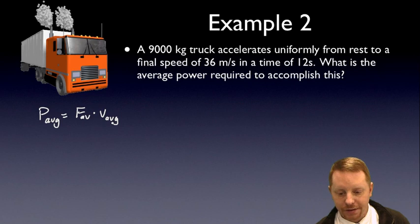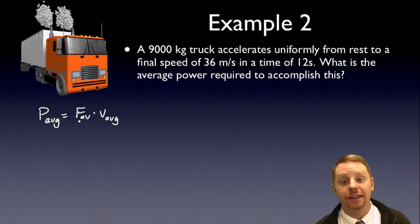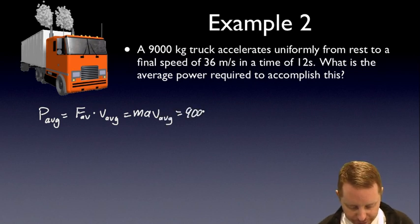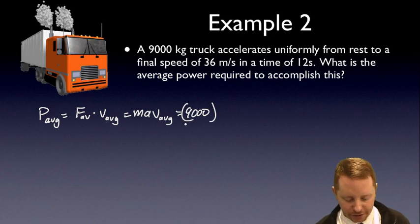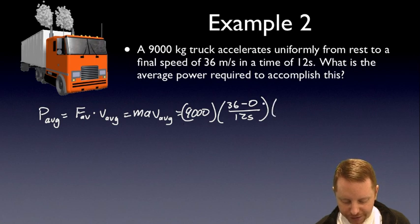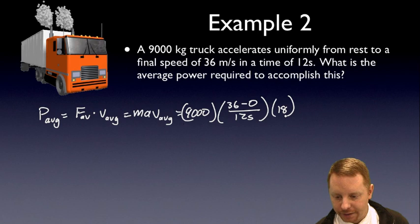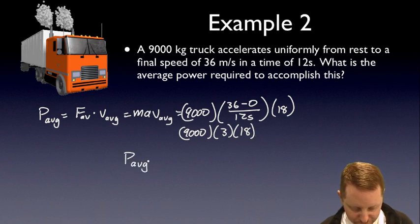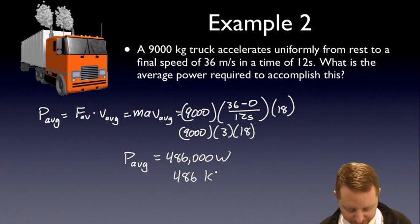The average power developed is just going to be the average force times the average velocity. Well, if that's times the average velocity, the force average is just going to be mass times acceleration, since the acceleration is going to be constant. So that becomes mass times acceleration times V average. Or 9,000 kilograms, our acceleration we can get from our kinematic equations. Acceleration is change in velocity over time. Our final velocity, 36 meters per second, minus initial divided by our time of 12 seconds. So there's our acceleration times our average velocity. If it's constant acceleration and we go from 0 to 36, the average is halfway in between the two. 18 meters per second. Plug that all into my calculator. That becomes 9,000 kilograms times 3 meters per second squared times 18 meters per second. Or average power must be about 486,000 watts, which we might write as 486 kilowatts.